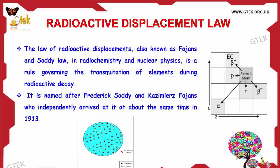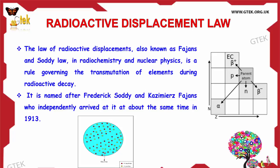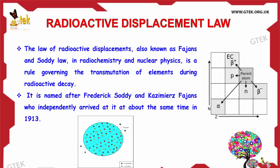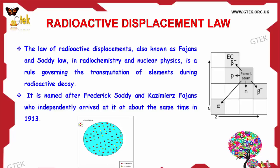The law of radioactive displacements, also known as Fajans' and Soddy's Law, is a rule in Radiochemistry and Nuclear Physics governing the transmutation of elements during radioactive decay. It is named after Frederick Soddy and Casimir Fajans, who independently arrived at it at about the same time in 1913.